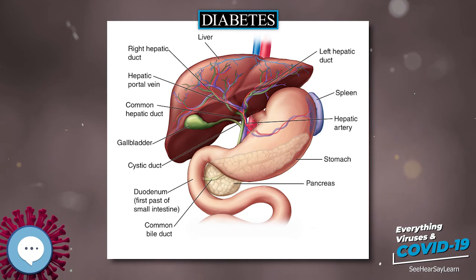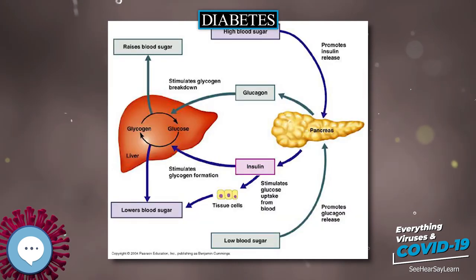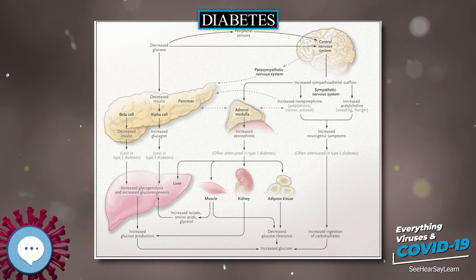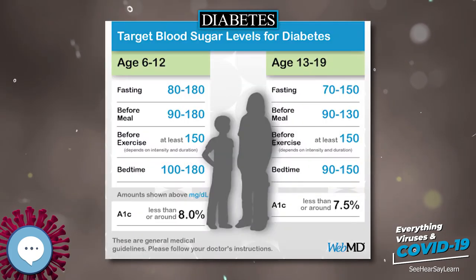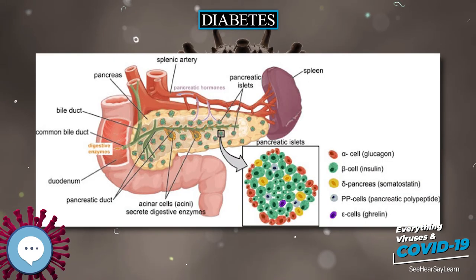Per the American College of Physicians, the goal of treatment is a HbA1c level of 7–8%. Attention is also paid to other health problems that may accelerate the negative effects of diabetes. These include smoking, high blood pressure, metabolic syndrome, obesity, and lack of regular exercise. Specialized footwear is widely used to reduce the risk of ulcers in at-risk diabetic feet, although evidence for the efficacy of this remains equivocal.